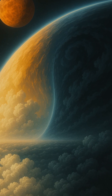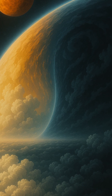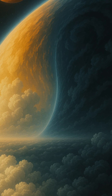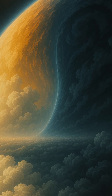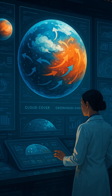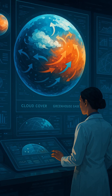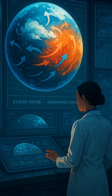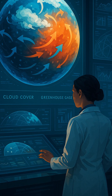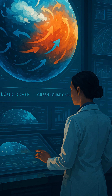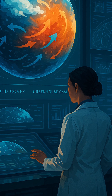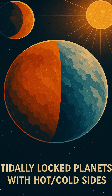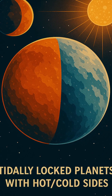One particularly intriguing aspect of exoplanet climate science involves tidally locked planets — worlds that always show the same face to their host stars, much like how the Moon always faces Earth. On such planets, the star-facing side experiences perpetual daylight, often leading to scorching surface temperatures, while the far side remains in constant darkness and bitter cold.